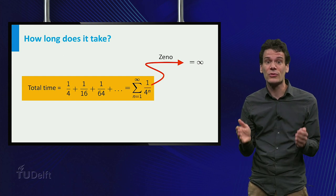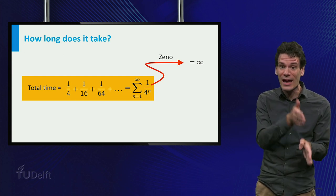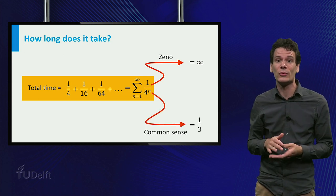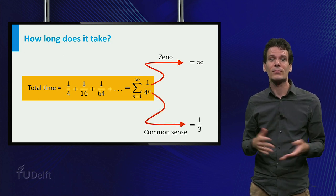In fact, the terms should add up to exactly the time at which Achilles catches up with the tortoise, t equal to 1 third of a second. Who is right here?